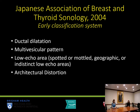There are different classification systems for non-mass findings on ultrasound. One of the earliest was developed in 2004 in Japan by the Association of Breast and Thyroid Sonology. They described different characteristics including ductal dilatation, a multivesicular pattern, low echo areas which could be spotted or mottled, geographic or indistinct, as well as architectural distortion.